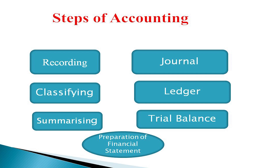The steps of accounting are: recording, classifying, and summarizing. In recording, you record entries in the journal book. Since it is a very lengthy process, you cannot verify or clarify immediately, so you transfer to the ledger account. In classifying, all journal entries are classified and taken into the ledger account, where each individual account is maintained.